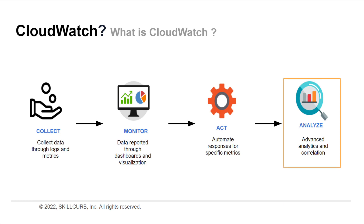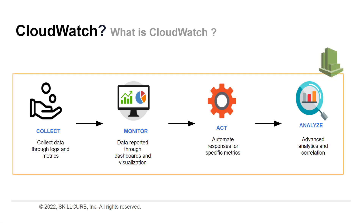For example, set up automated actions to notify you if an alarm is triggered and automatically start auto-scaling to help reduce mean time to resolution. You can also deep dive and analyze your metrics, logs, and traces to better understand how to improve application performance. This is how the overall stages of CloudWatch work in AWS.